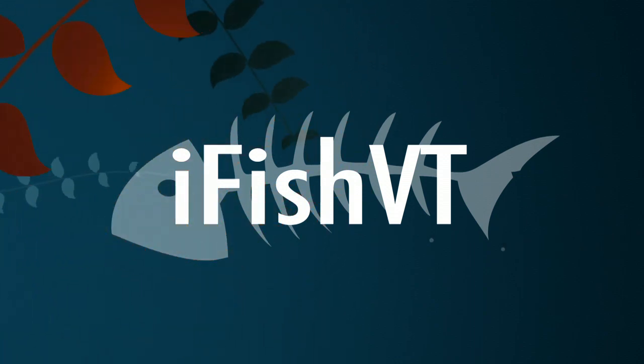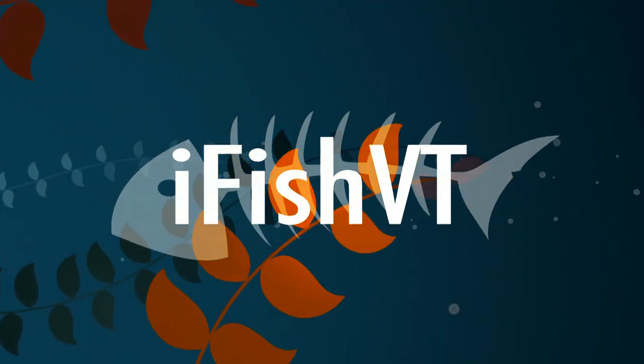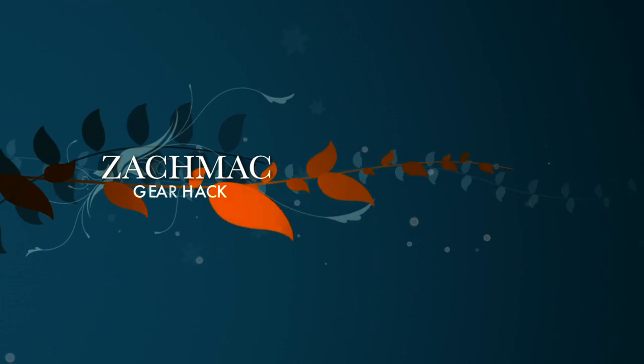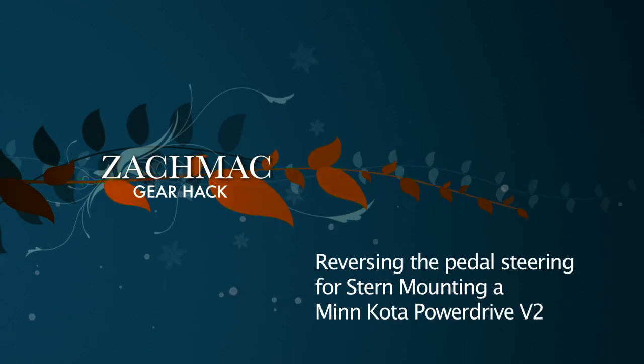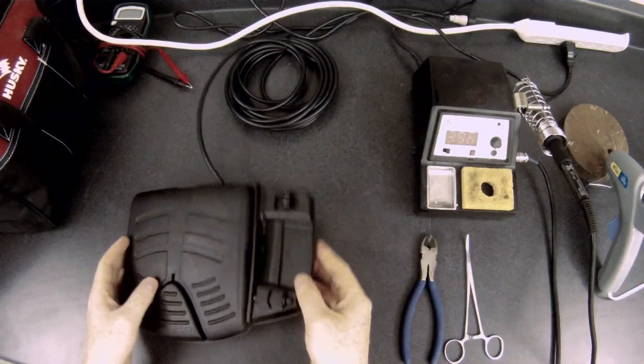The Minn Kota Power Drive V2 comes only as a bow mount option. In order to use this on the stern of a boat, you'll need to reverse the steering in the pedal. During this tutorial, I'll show you how.